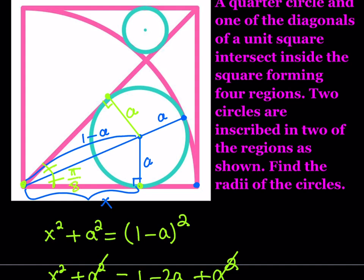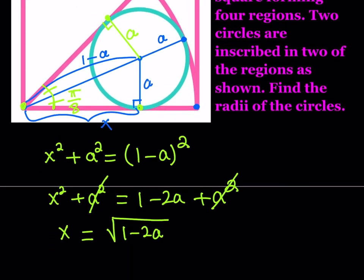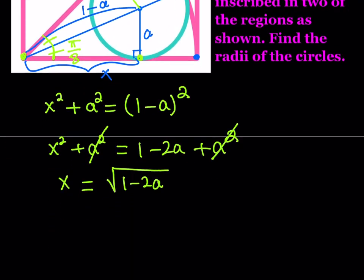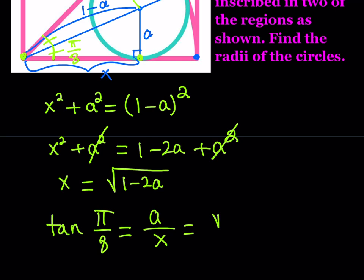Now, how do we associate that with the lengths? Here's where we use trigonometry. We can write tangent of π/8 equals A over X. But we were able to express X in terms of A, so I can write it as A over the square root of one minus 2A. This is an expression in A — A is unknown — but I do know tangent of π/8.